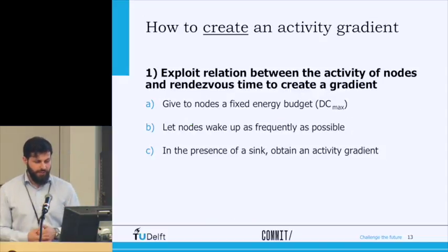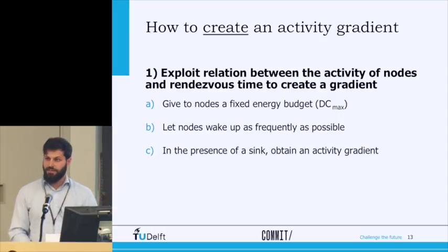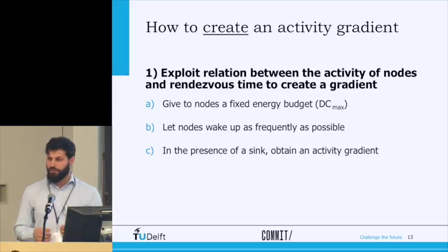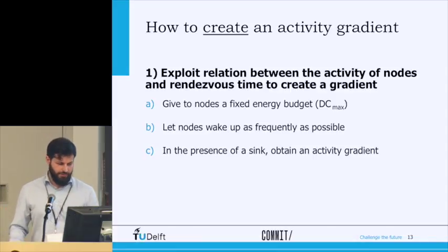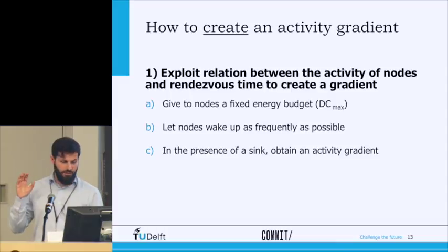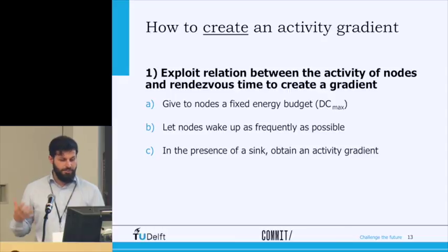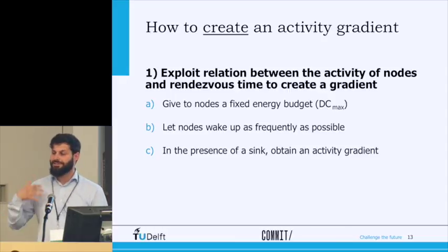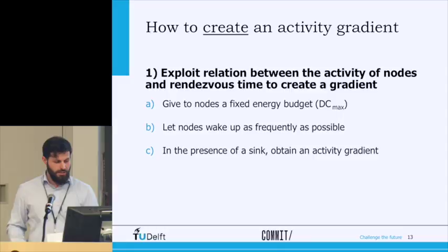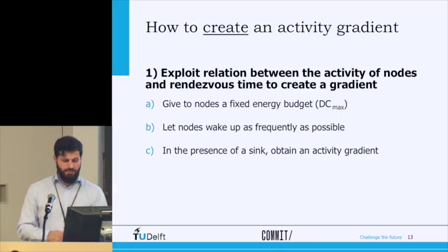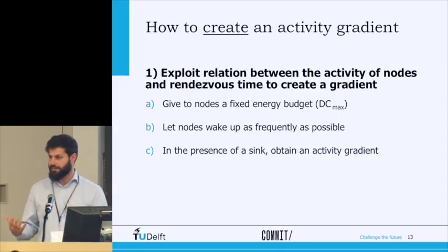In the first step, we give each node a fixed energy budget specified as a duty cycle — for example, every node can consume at maximum five percent of their energy, meaning a duty cycle of five percent. In the second step, we tell nodes: given this budget, wake up as much as possible. Nodes measure how much energy they consume every time they forward a message, and based on that they determine how many times they can wake up within their budget. Given these two simple rules and a sink, the gradient is automatically created.